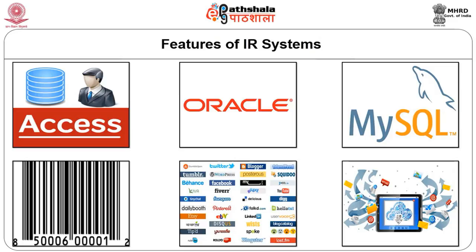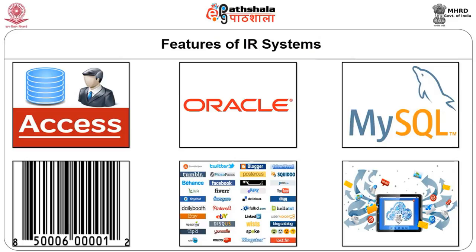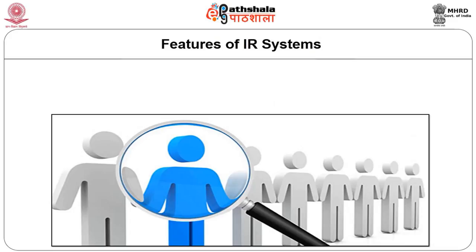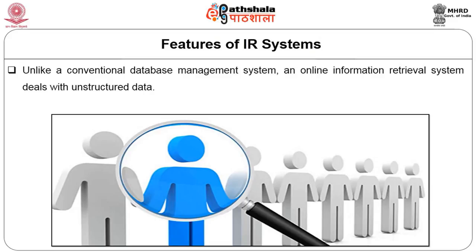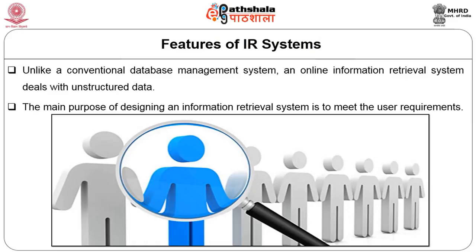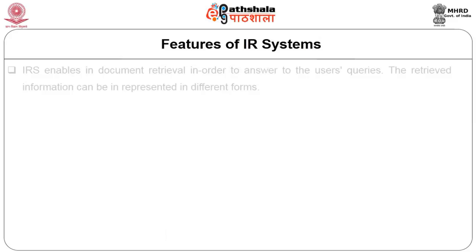The main objective of databases is to enable users to search for specific records to be matched with one or more specific conditions or search criteria, and such criteria are usually laid by the user in an online environment. Unlike a conventional database management system, an online information retrieval system deals with unstructured data. The main purpose of designing an information retrieval system is to meet users' requirements, whether we are talking about the traditional offline model such as bibliographic management, or online web-based circumstances.